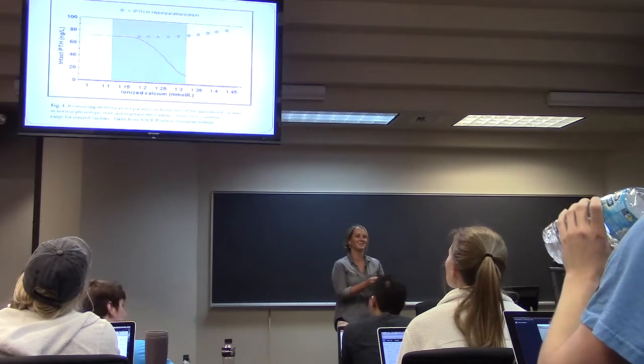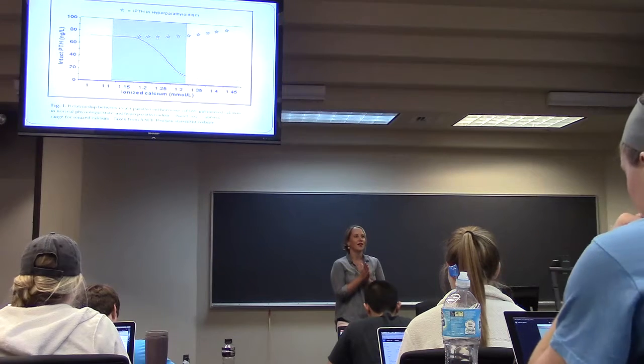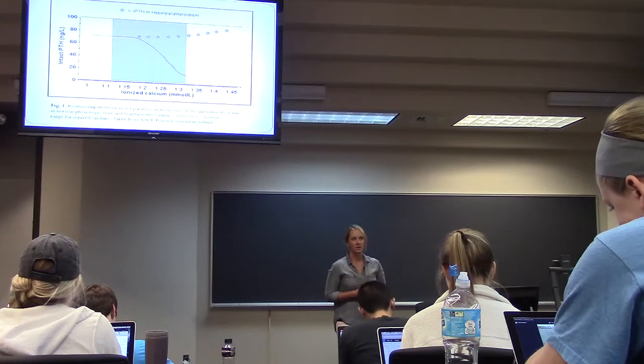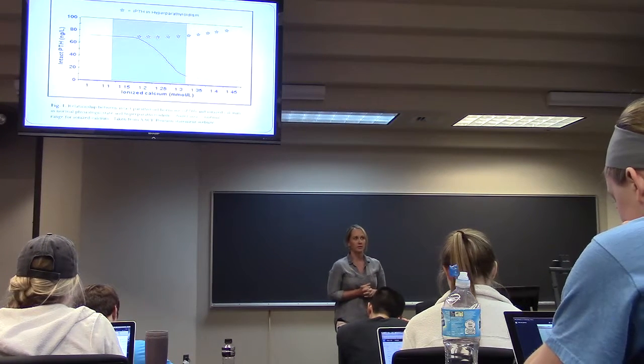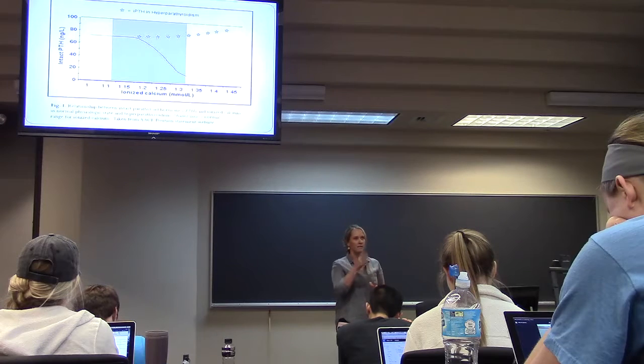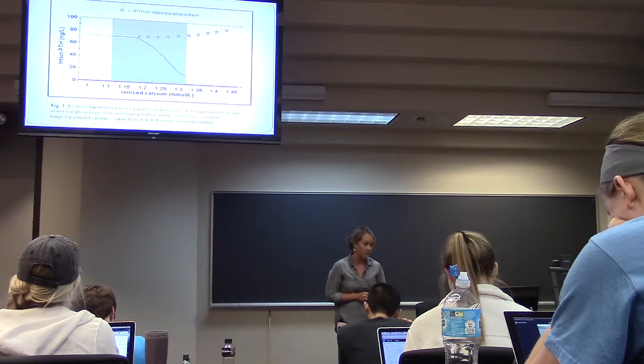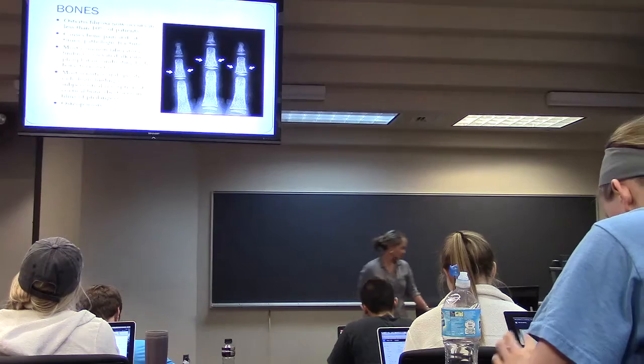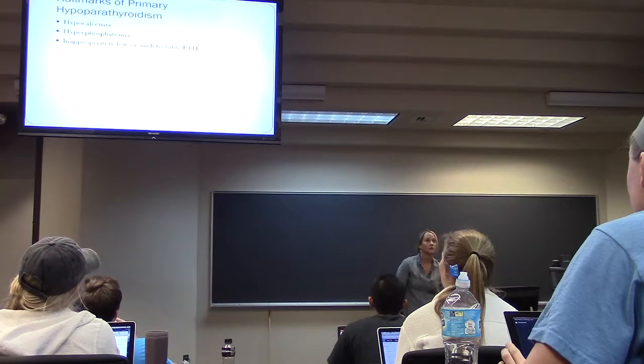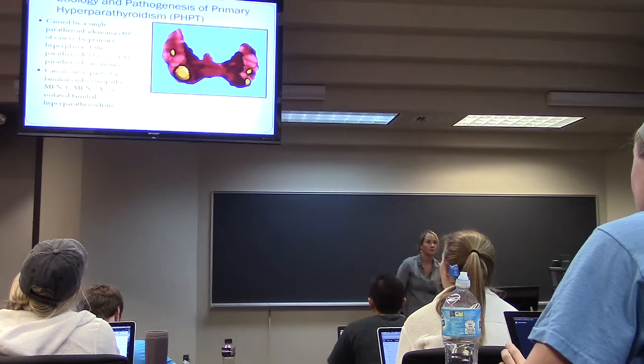So this is a graph of what it should do. The stars are what happens in hyperparathyroidism. As the calcium, the ionized calcium, goes up, you see around 1.2 there, the intact PTH should go down. But with hyperparathyroidism, it continues going up for some reason, and we'll talk about why.